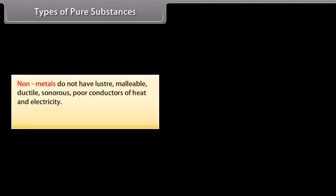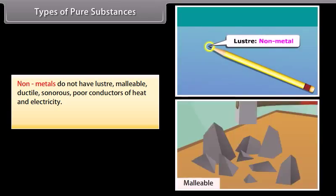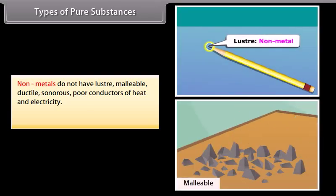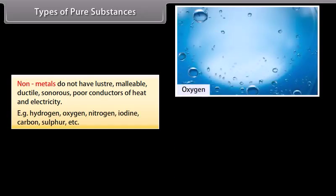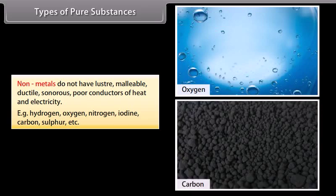Non-metals do not have luster, malleability, are not ductile or sonorous, and are poor conductors of heat and electricity. Examples include hydrogen, oxygen, nitrogen, iodine, carbon, sulfur, etc.